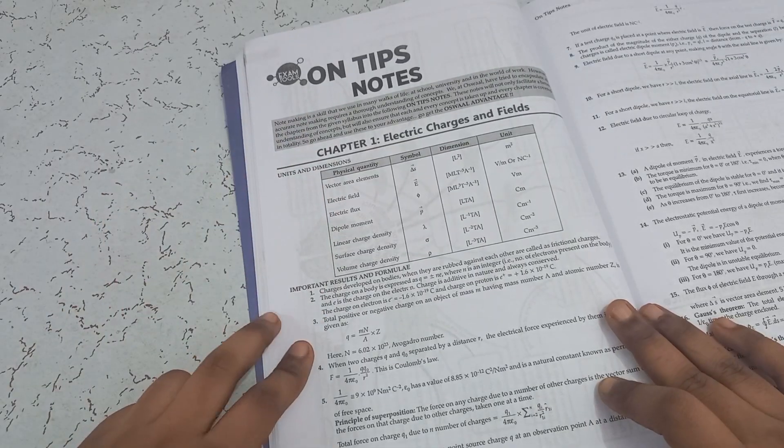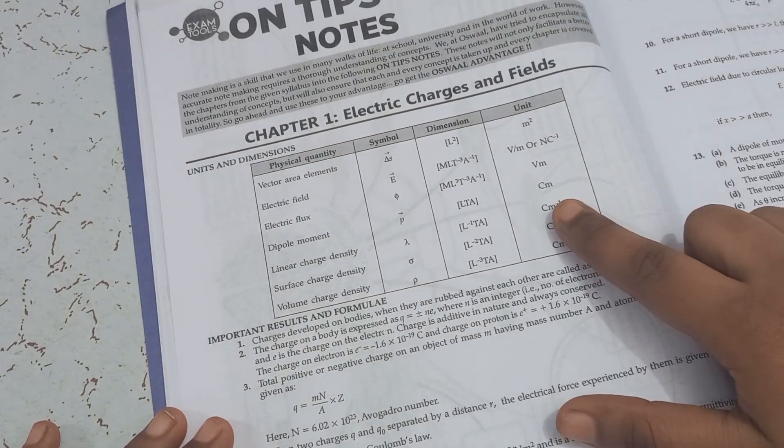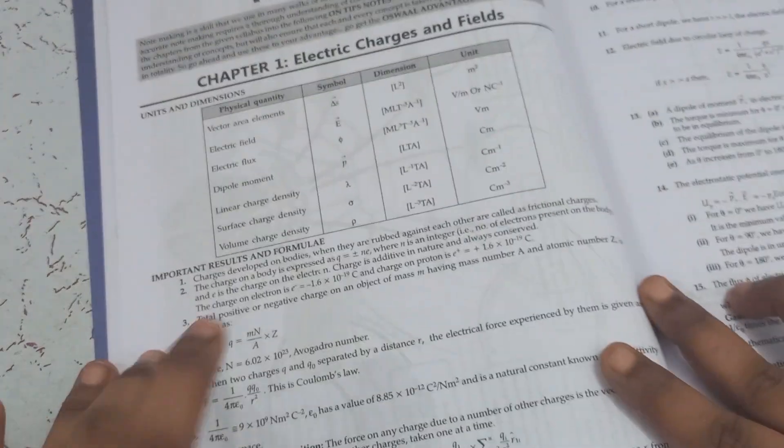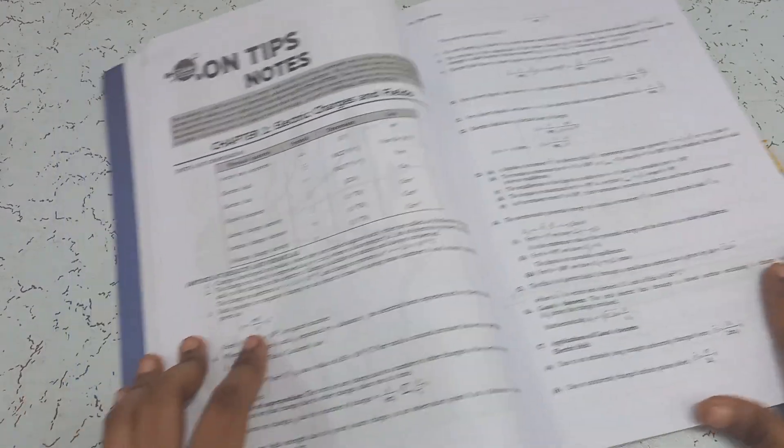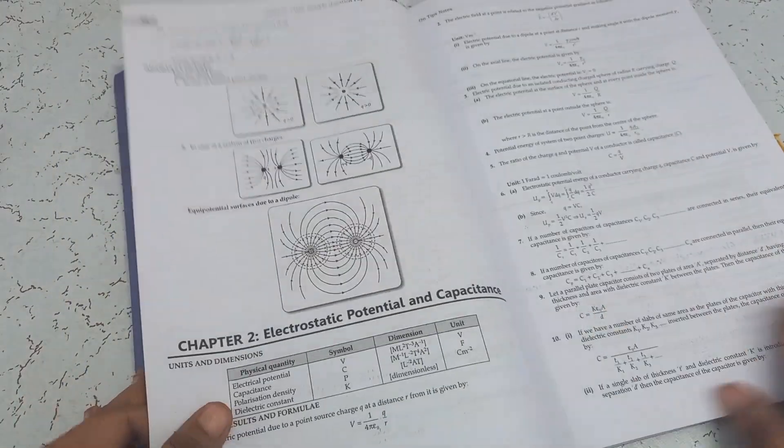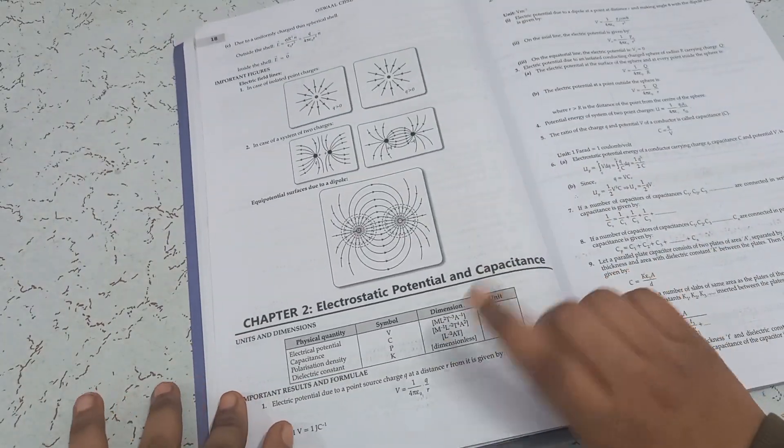Next thing I was talking about, one-tip notes where in just 2 pages, every single chapter is explained very well. At the beginning of every chapter, it has units and dimensions used in that particular chapter. Important results, whatever is important to learn and the formulas.